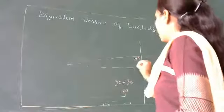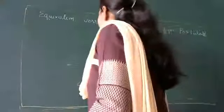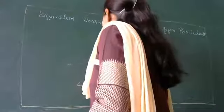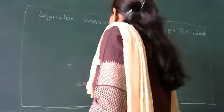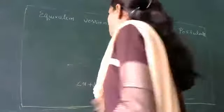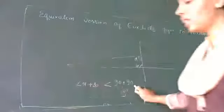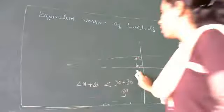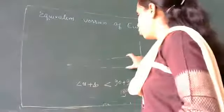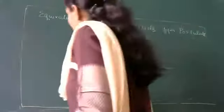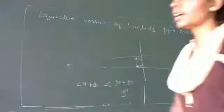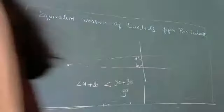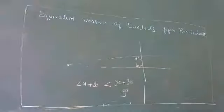We are having angle A and angle B. Angle A plus angle B should be less than two right angles. Then, if we produce these two lines, they will intersect at some point. That is Euclid's fifth postulate.